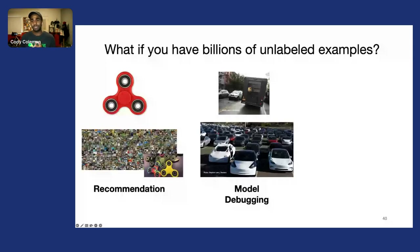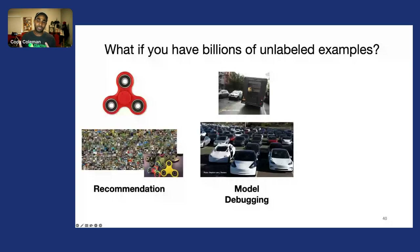This comes up all the time—things like occluded stop signs as well as debris on the road. All these edge cases only appear in a fraction of the overall data, which is kind of like a needle-in-a-haystack problem.